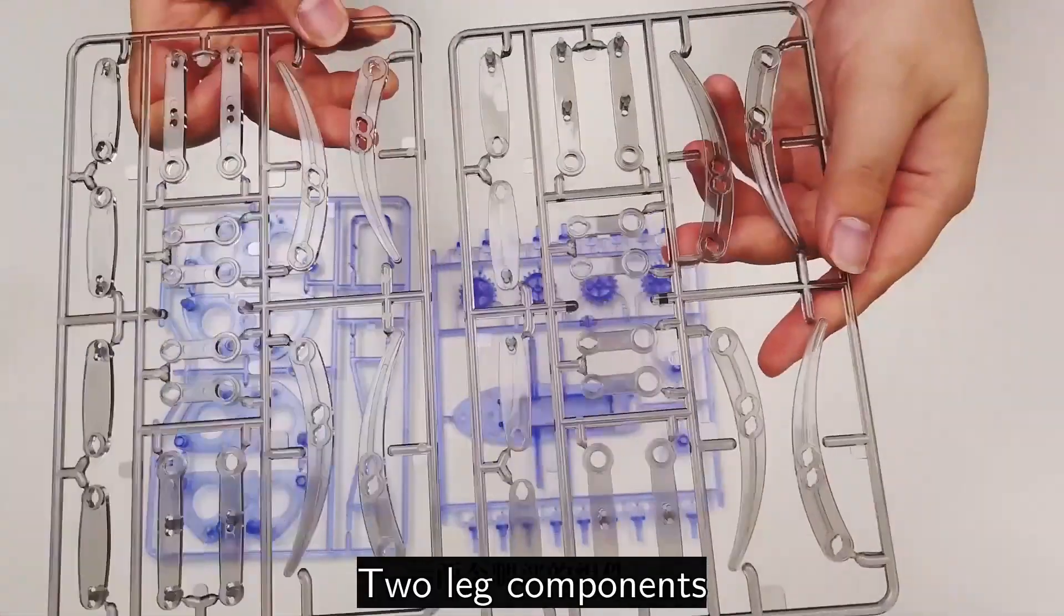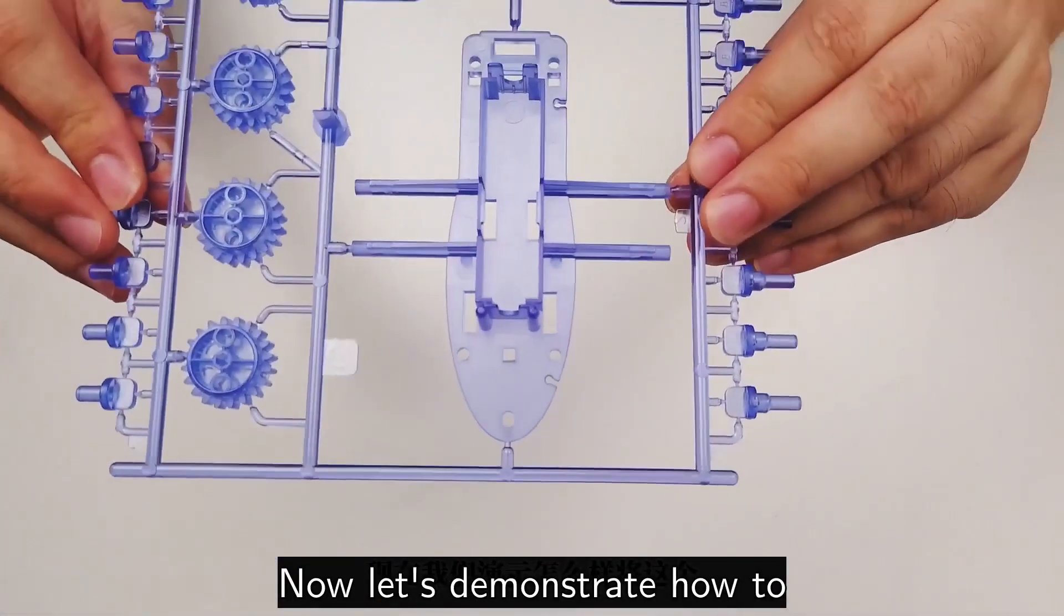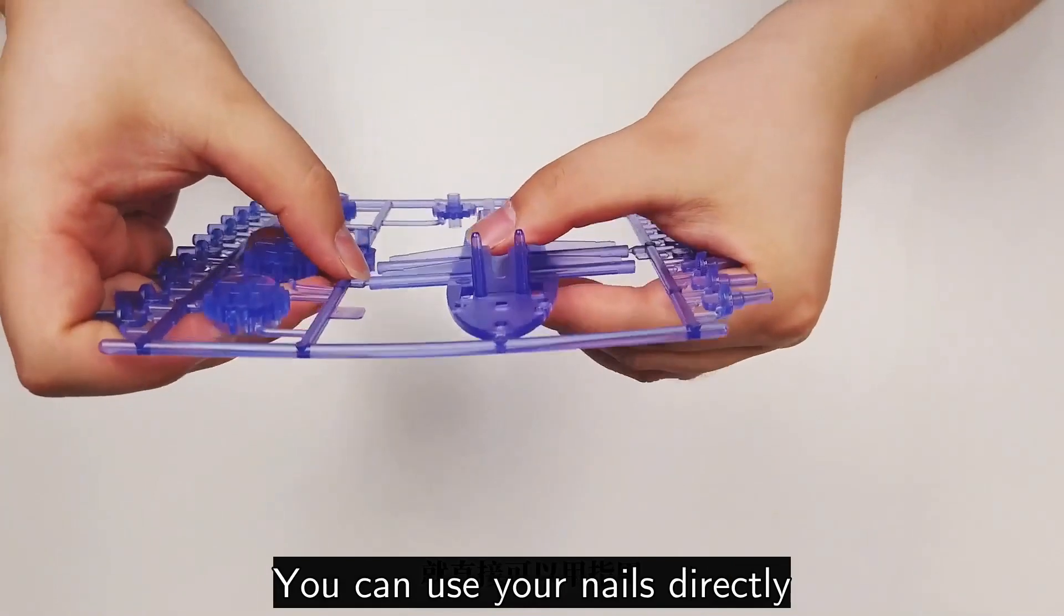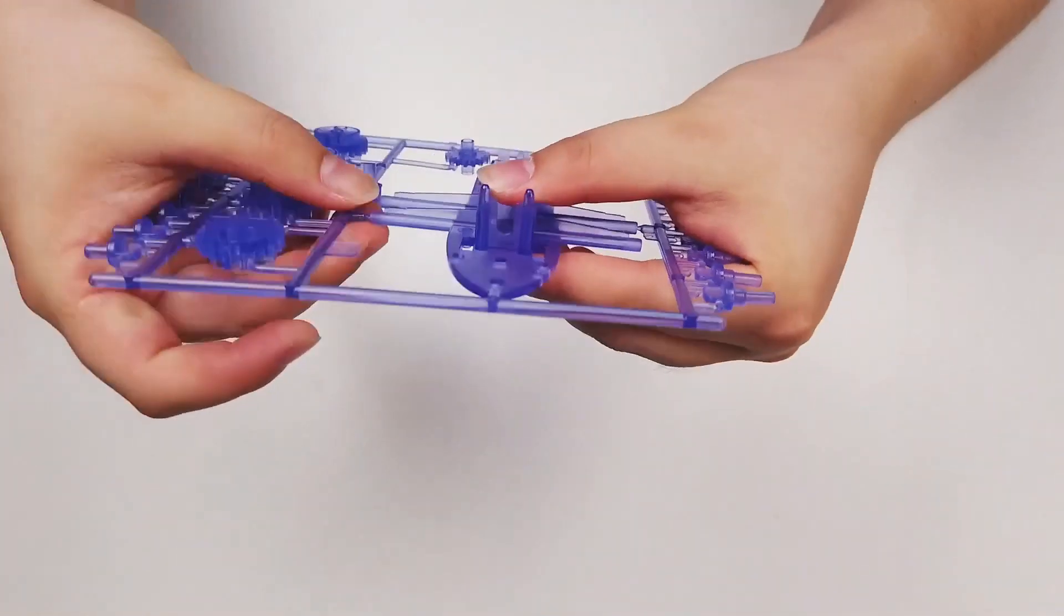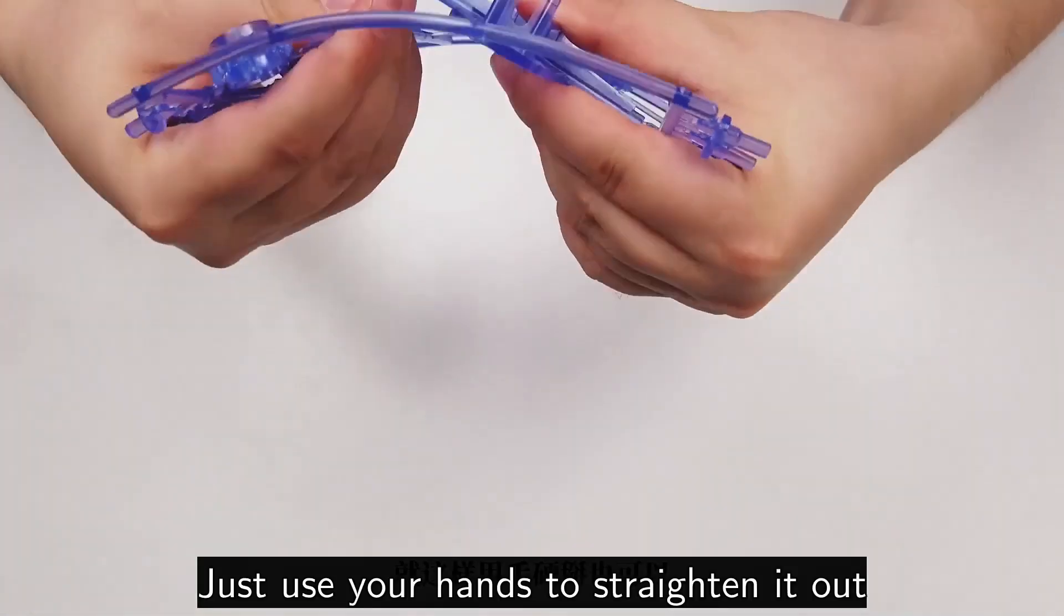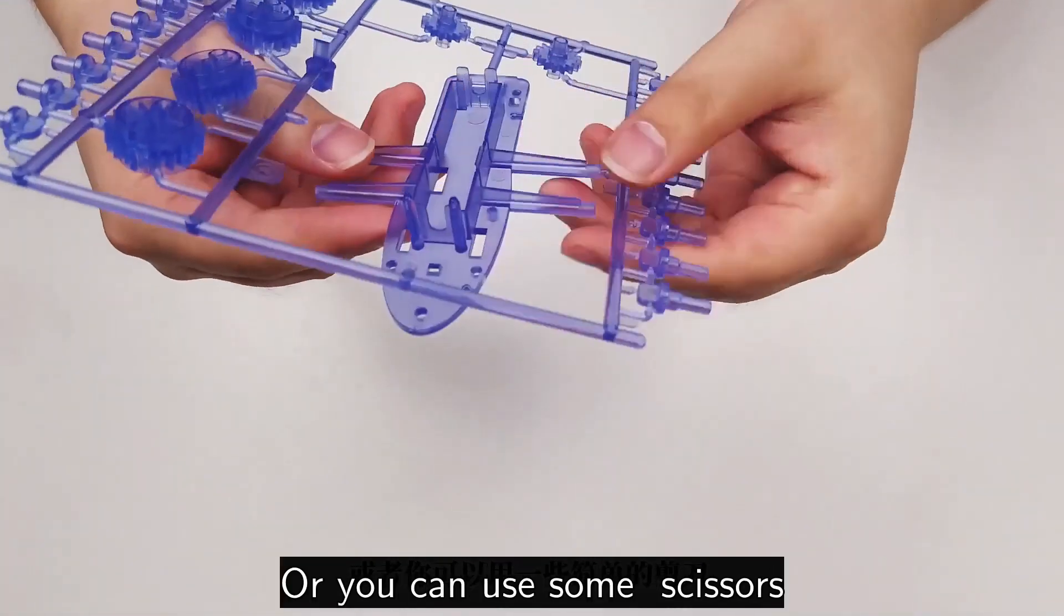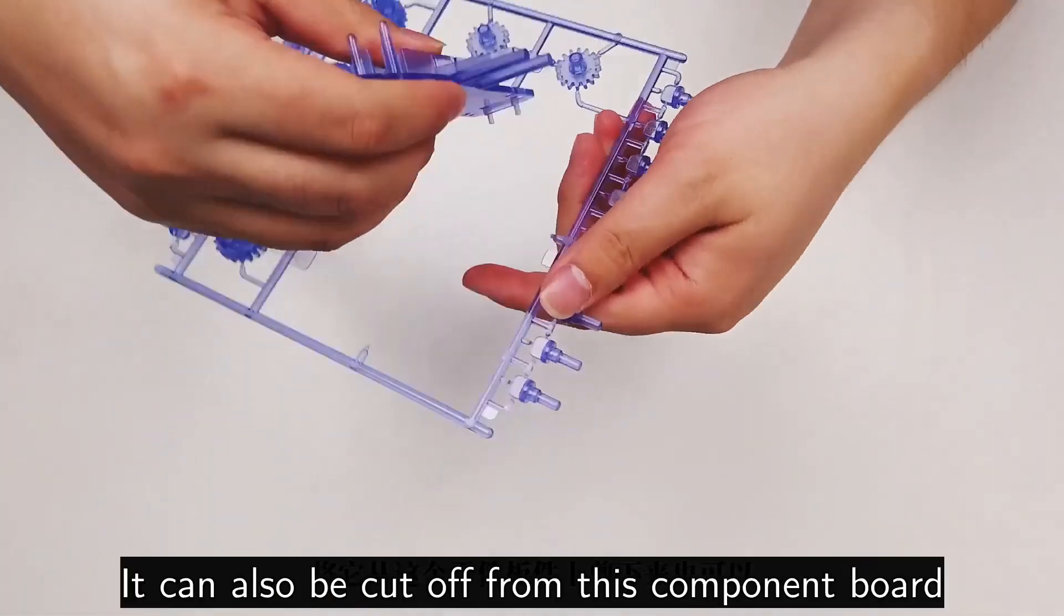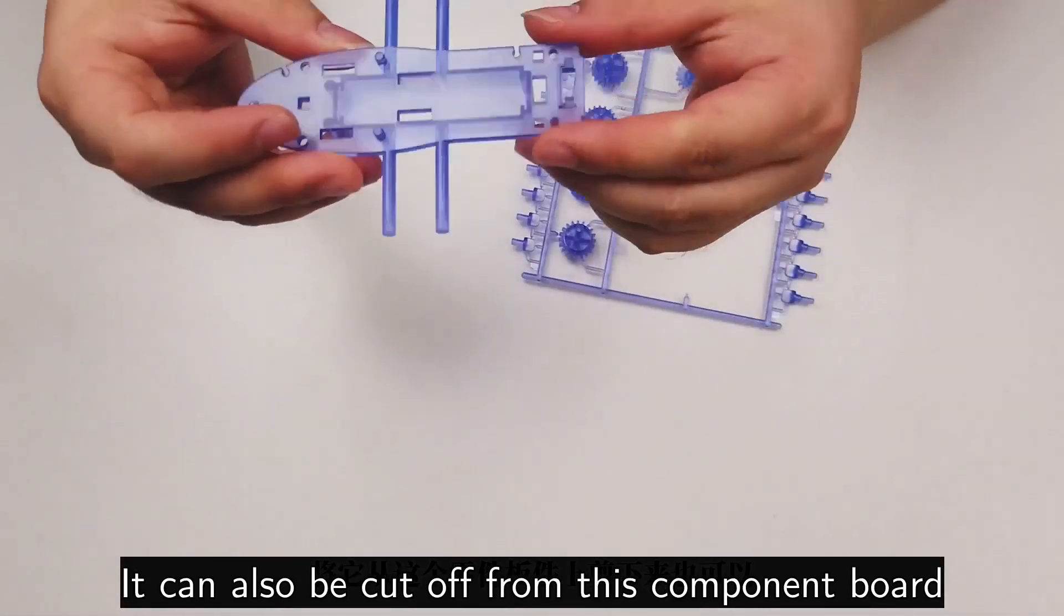Now let's demonstrate how to remove the parts from the plate. It's actually quite simple. You can use your nails directly, just use your hands to straighten it out, or you can use scissors, nail clippers, or pliers. It can be cut off from this component board. Just remove it this way.